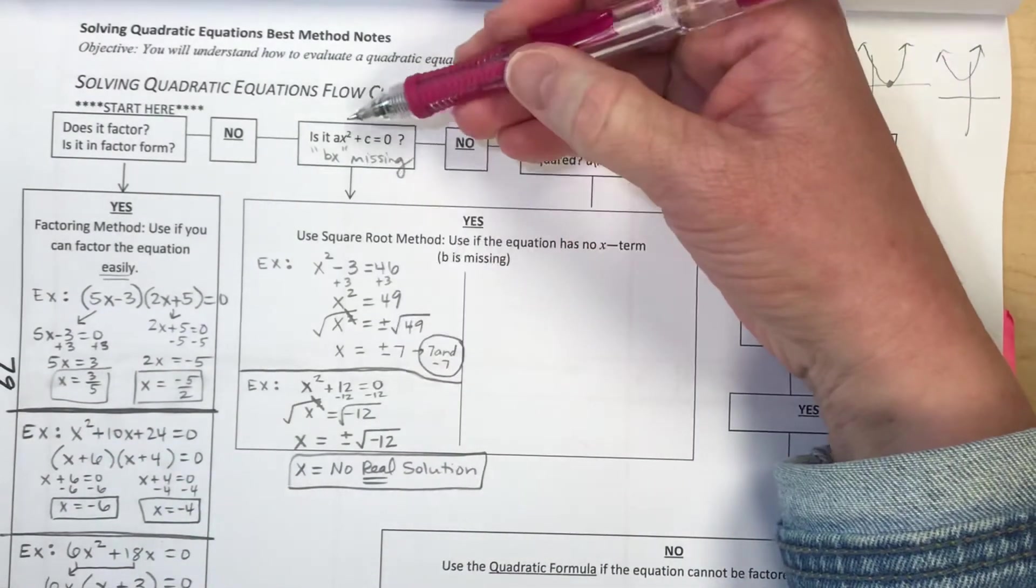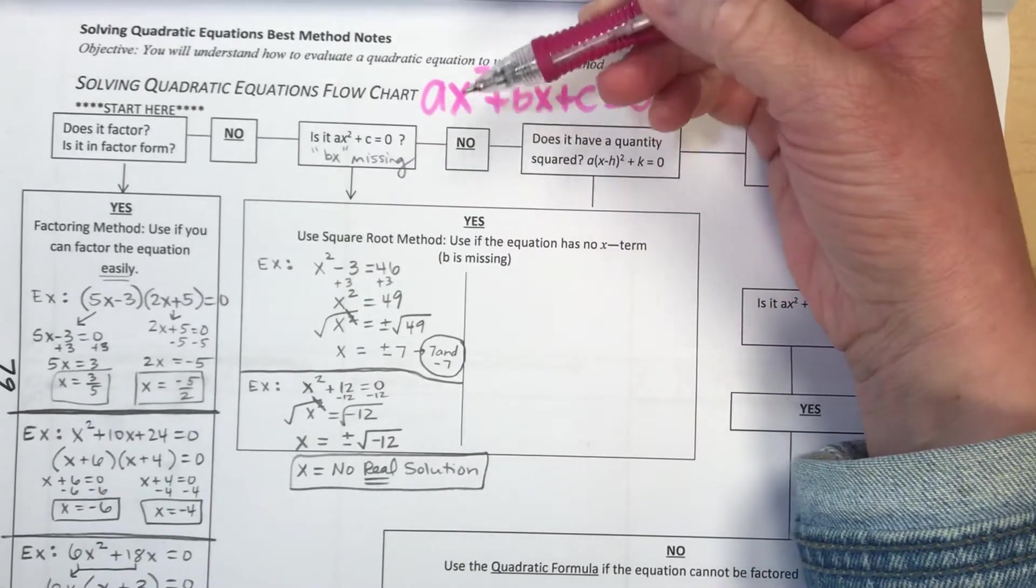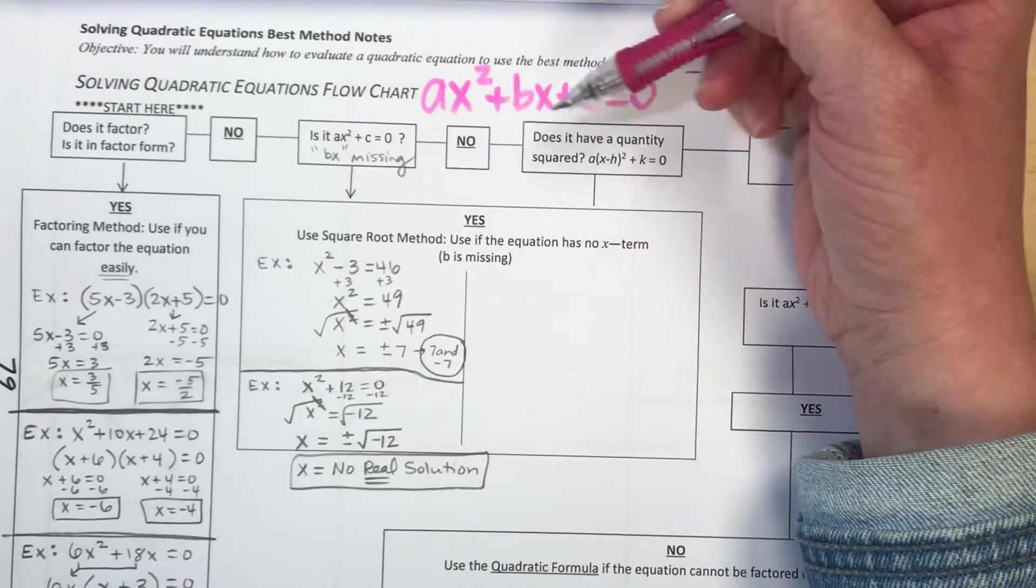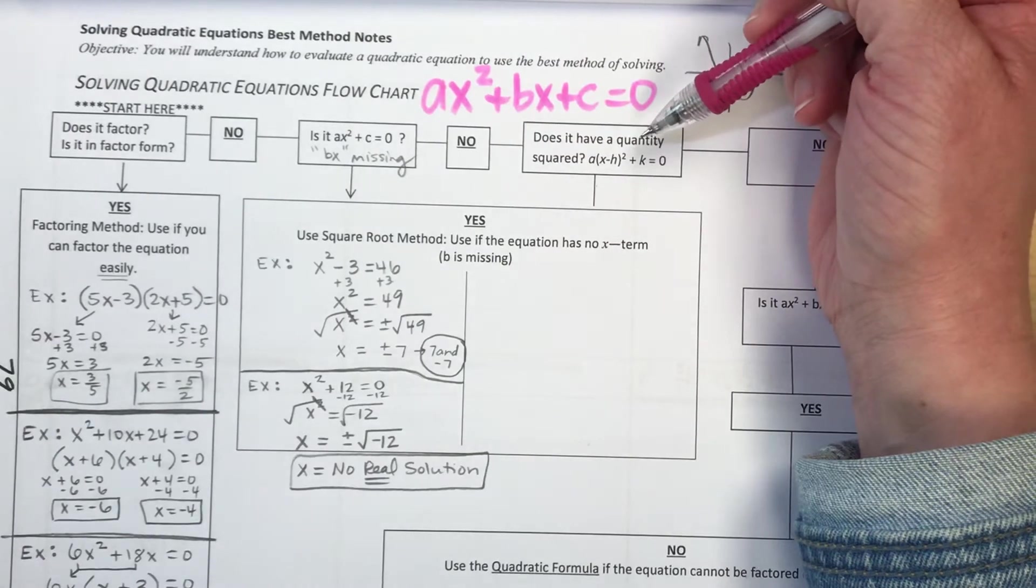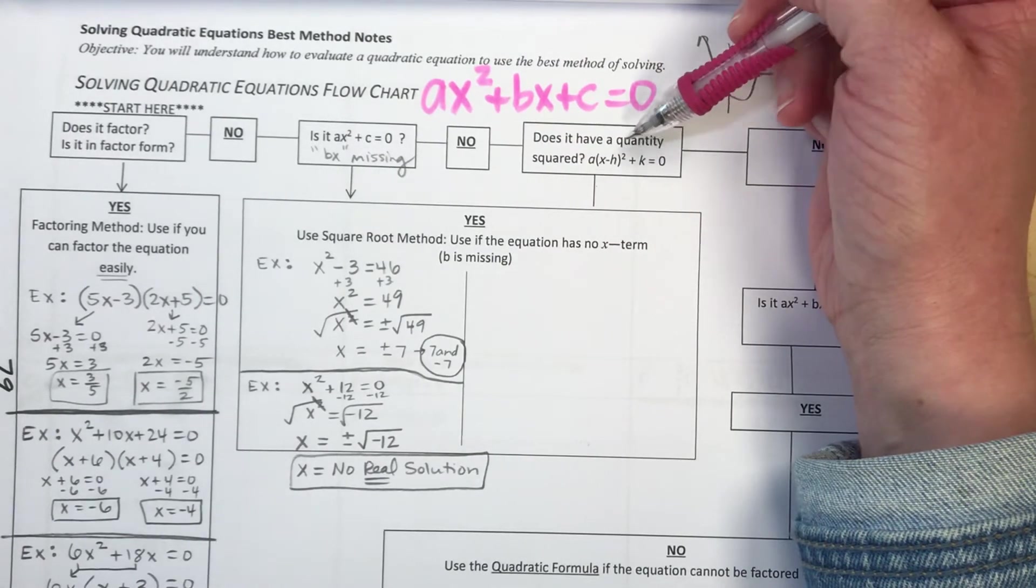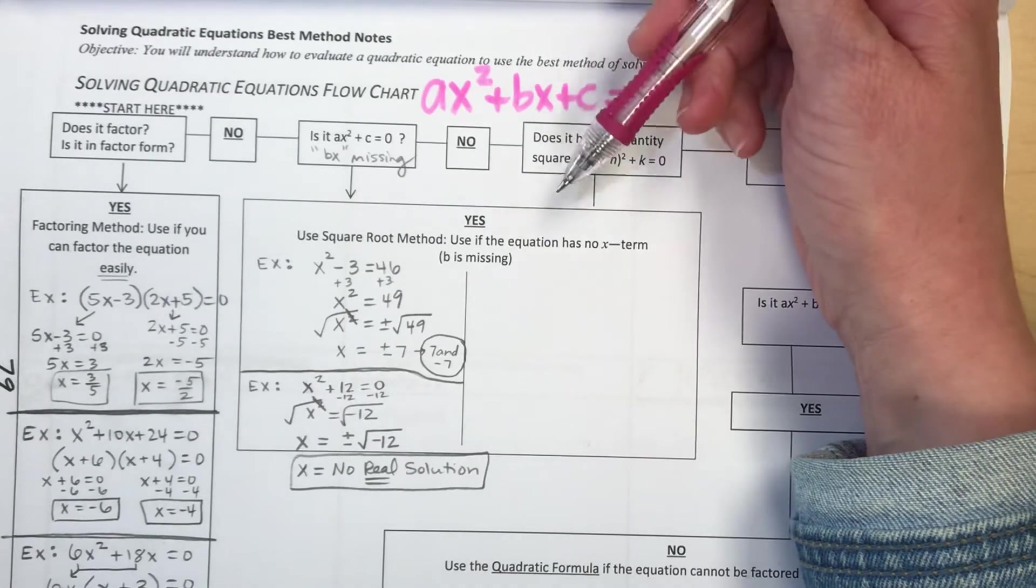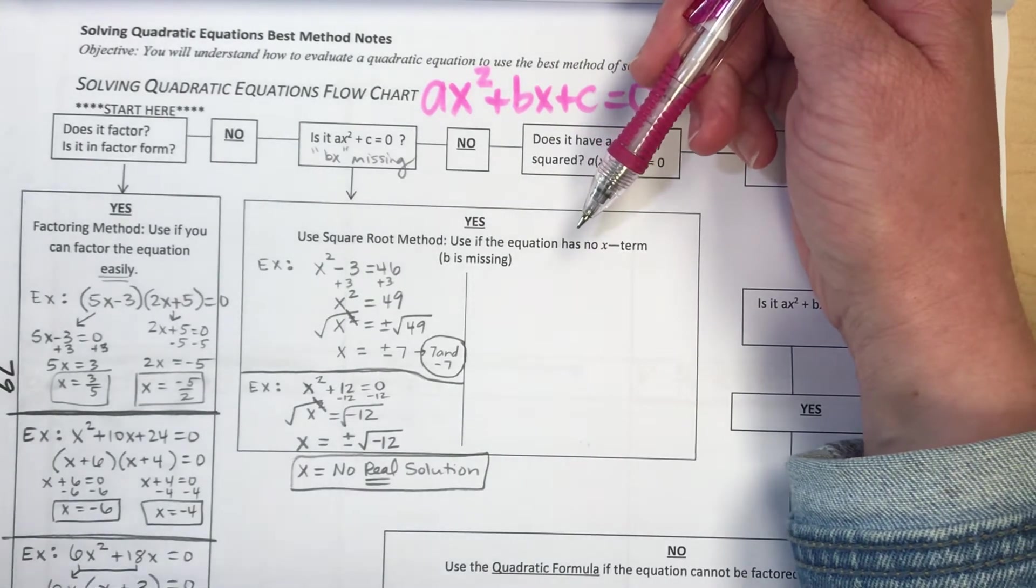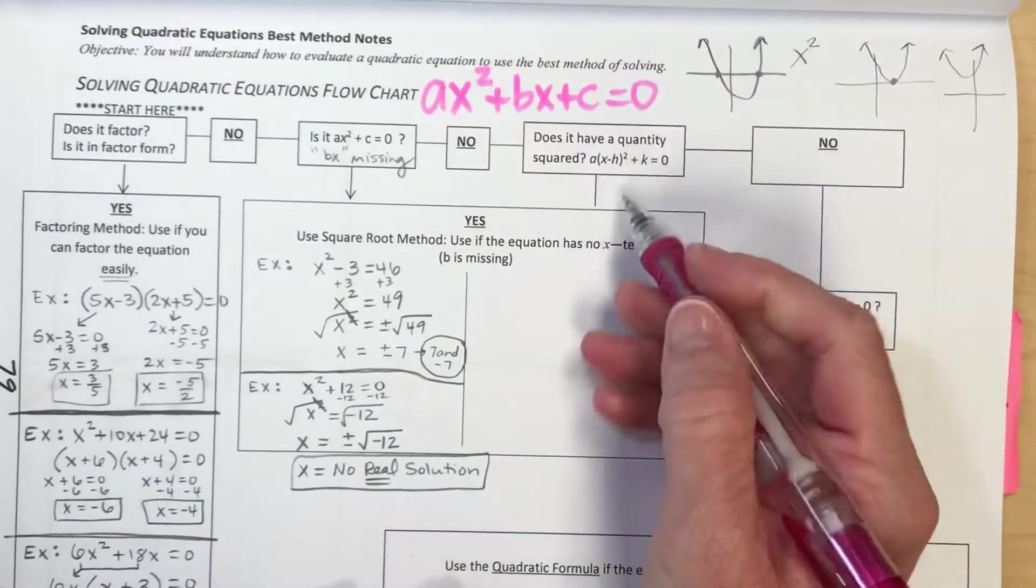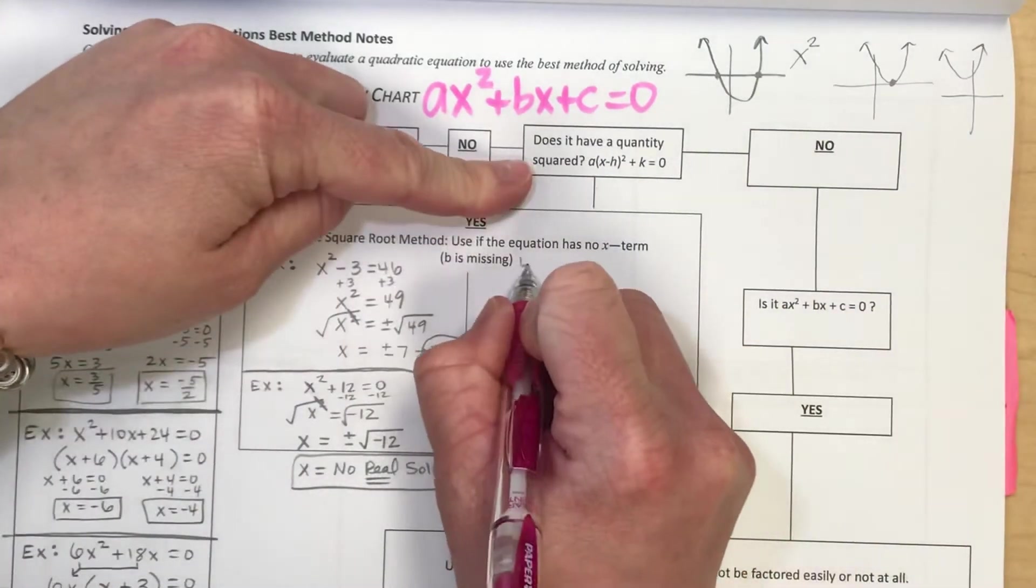Let's go back up here. Those are my two examples for if you had a linear term missing. What if you said no, I don't have a linear term missing? What if you have a quantity squared, meaning a group in parentheses that has a power of 2 on it? You would use what is called the square root method. You want to isolate your group and apply the square root symbol.